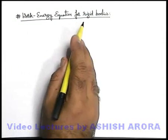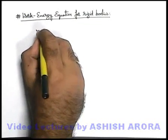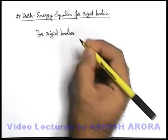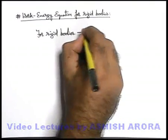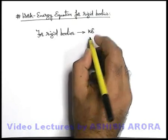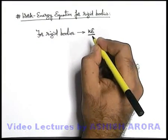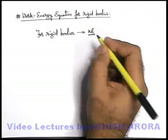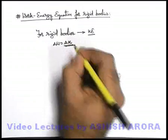Let us study the work-energy equation for rigid bodies. As we have already studied, rigid bodies can never be deformed. Rigid bodies can contain only kinetic energy; elastic potential energy can never be stored in these. So independently, a rigid body can only possess one type of energy due to its motion, which we call kinetic energy. That means whatever work we do can simply be written as an increase in kinetic energy.